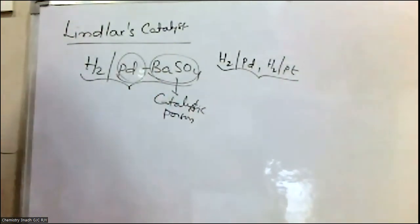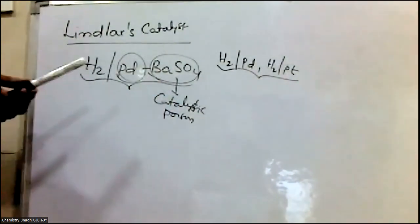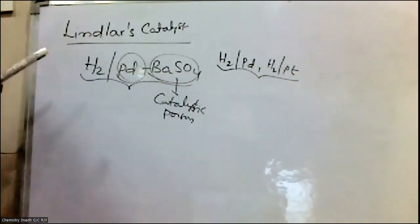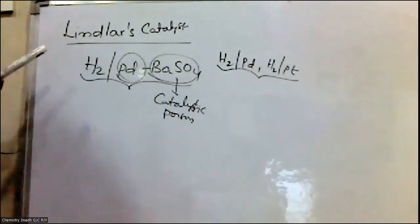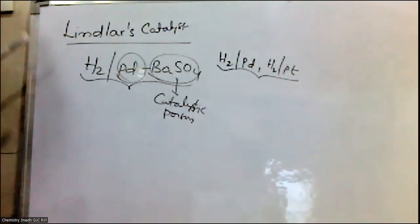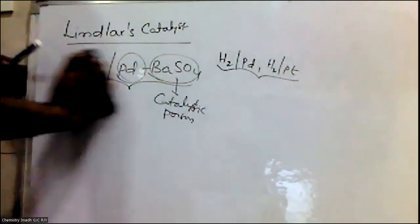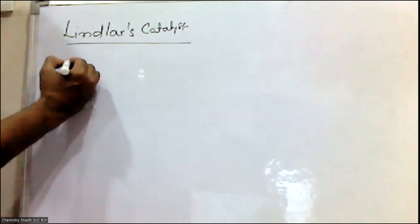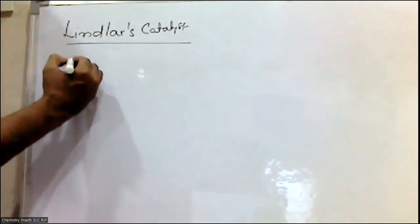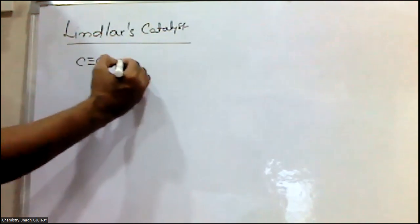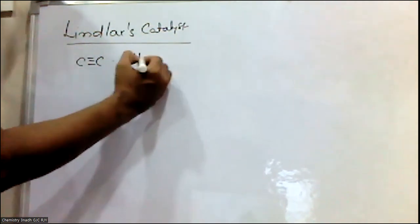Barium sulfate is used as a catalytic poison — it acts as a catalytic poison. Now let me explain the various reactions involving Lindlar's Catalyst. One reaction involves alkynes, which are unsaturated hydrocarbons having a carbon-carbon triple bond.